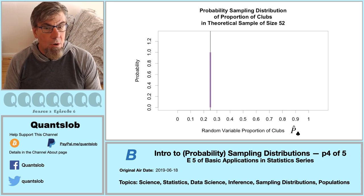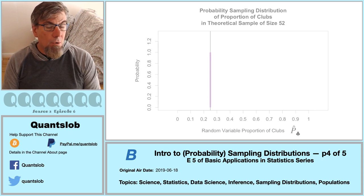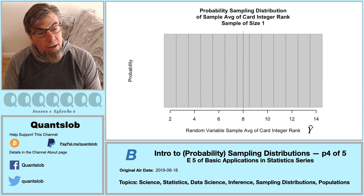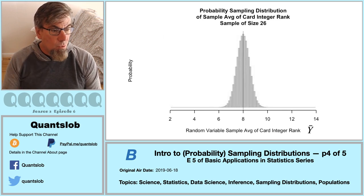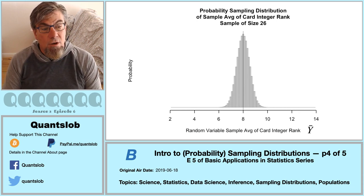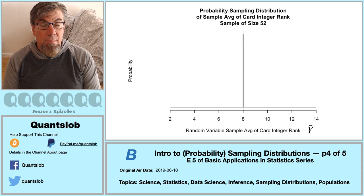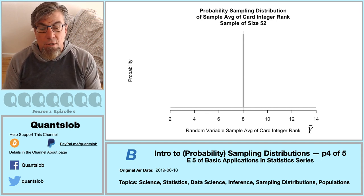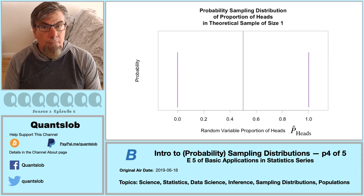Probability distributions where one value occurs with probability one are sometimes called degenerate — like your little nephew that keeps putting the remote control in the fish tank. Again, with our standard deck of playing cards, we constructed an integer rank value attribute, ran our animation up to a sample size of 26, and saw the resulting sampling distribution of the average integer rank. Had we sampled all the cards, our sampling distribution would be degenerate at 8 — the population average. We lastly looked at the sampling distribution of the proportion of heads in an imaginary infinite population of every possible toss of a coin, arriving at a sample size of 500 flips.